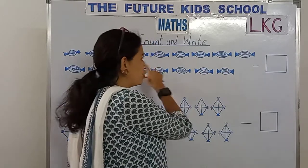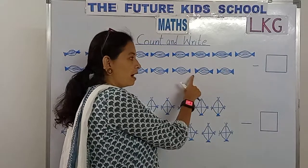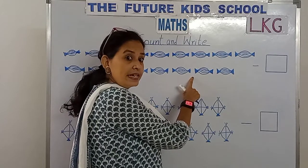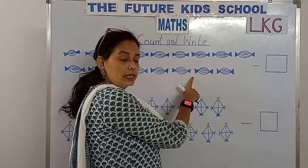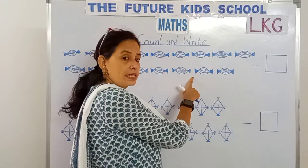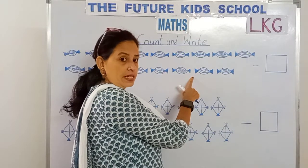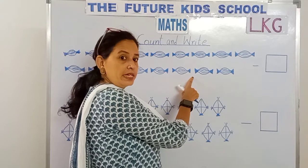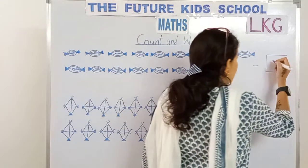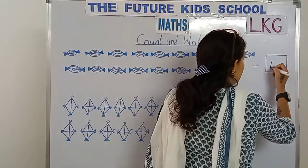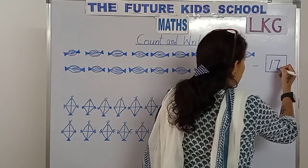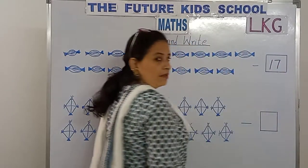How many chocolates do we have here? 17 chocolates. 1 and 7, 17. So write the number in this box — 1 and 7, 17.